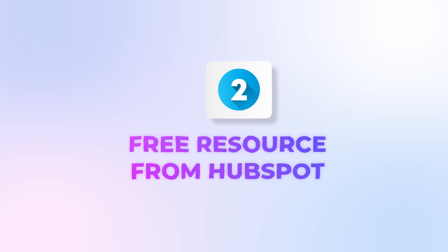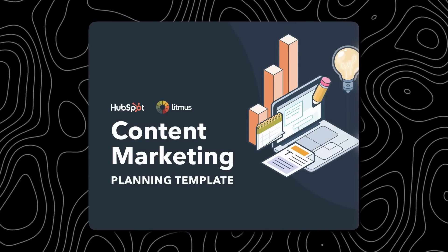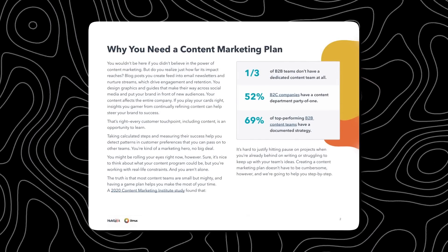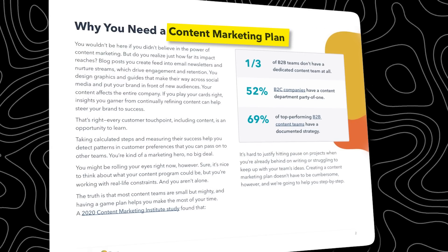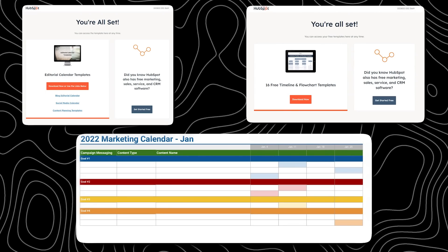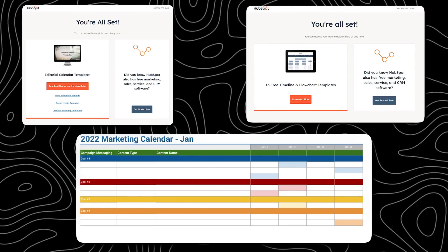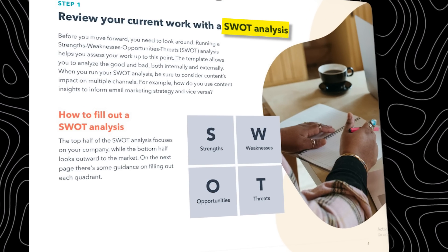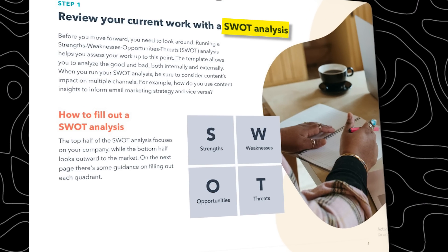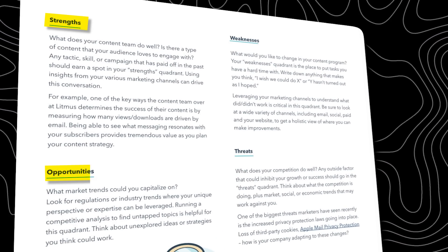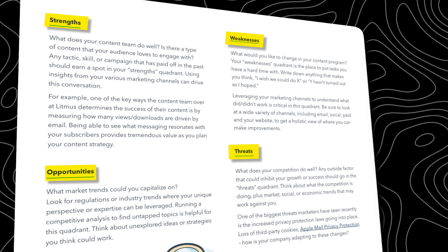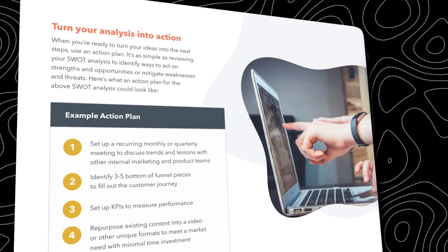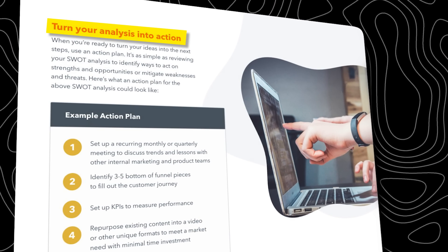The second tip is this awesome free resource from HubSpot — the Content Marketing Planning Template. It gives you a full content marketing blueprint for free, plus several other templates and planners. Starting with a SWOT analysis, you can identify your strengths, weaknesses, opportunities, and threats, and then take action based on that.